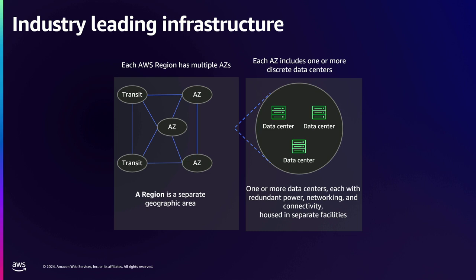Talking about the infrastructure attributes: AWS delivers the highest level of availability and resiliency compared to any other cloud service provider. Since day one, we've been deliberate in designing all our regions to be multi-AZ. Each region comprises multiple AZs — an AZ is a separate independent partition designed to operate independently, and each AZ consists of multiple data centers with redundant power and networking. When we decided to build AWS European Sovereign Cloud, we ensured we are leveraging this architectural excellence to deliver it.